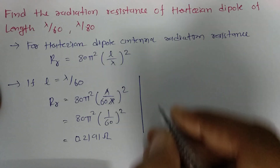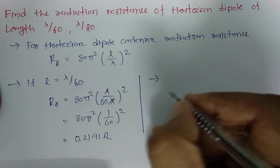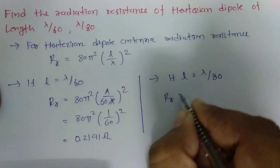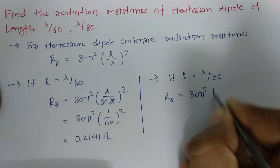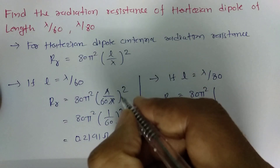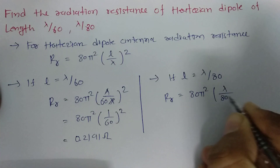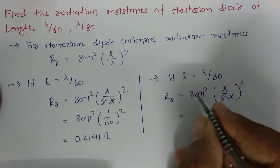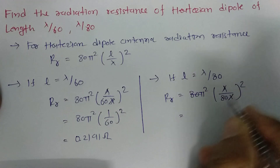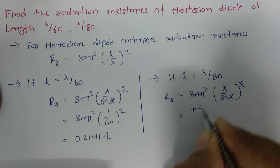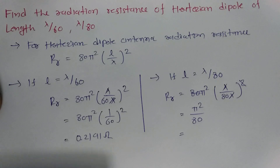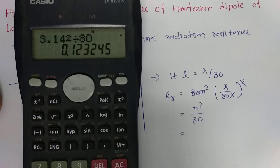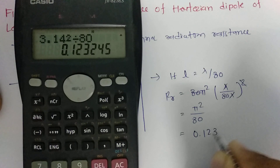Now for the second case, where L = λ/80: Rr = 80π² × (λ/80 ÷ λ)². The lambda terms cancel, giving 80π²/80² = π²/80. So that is 3.14² ÷ 80 = 0.1232 Ω. This is the radiation resistance when length is λ/80.